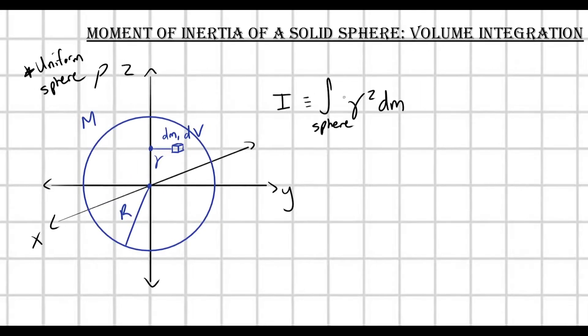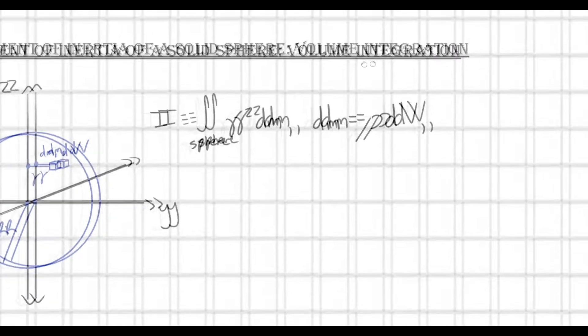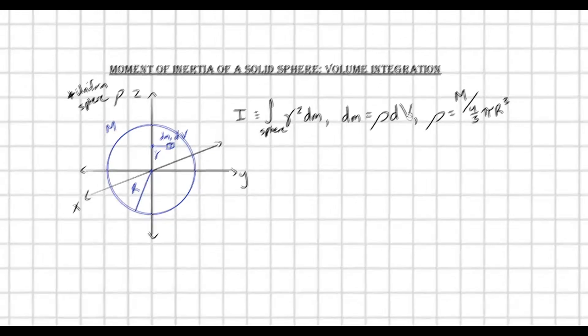And what's dm going to be equal to? As always, dm is just going to be equal to my mass density rho times dV, one of my infinitesimal volume elements. So what is rho? Rho is just going to be equal to the total mass of my sphere divided by the volume of my sphere, four thirds pi times big R cubed.